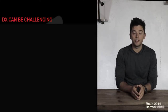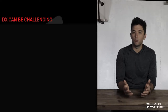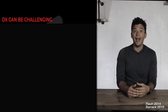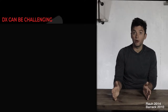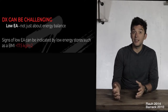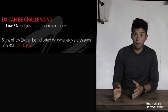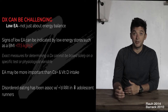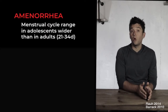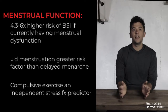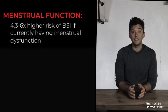Diagnosing the athlete triad is challenging — there's no specific test. Low energy availability can be hard to detect since many athletes continue to compete and train without pain. Signs can be present with a lower BMI, though BMI isn't always useful. Disordered eating is a significant risk factor for all running-related injuries, not just bone stress injuries. The normal menstrual cycle runs 21 to 34 days; it's important to ask what's normal for the individual.